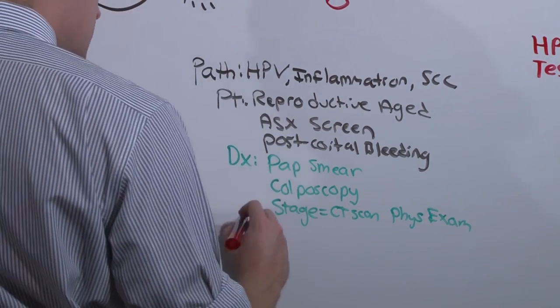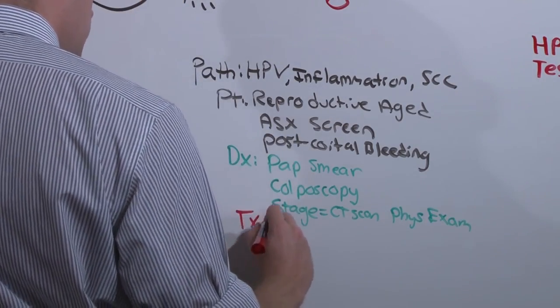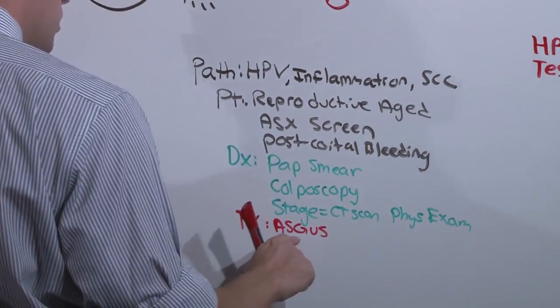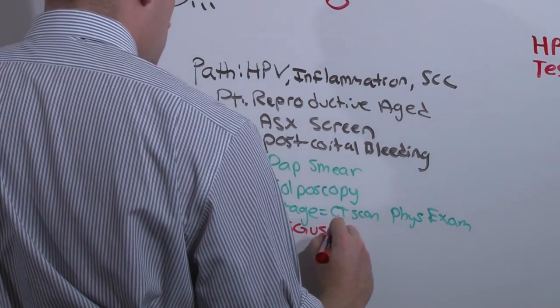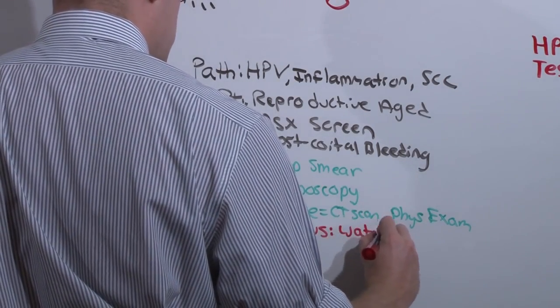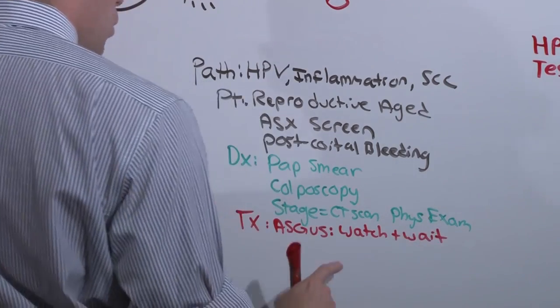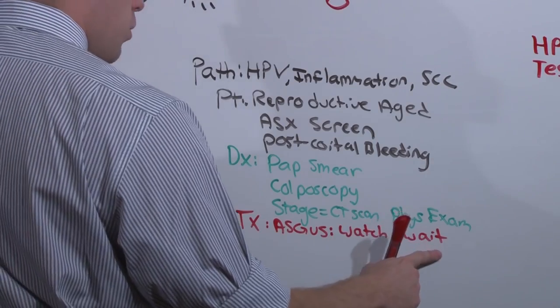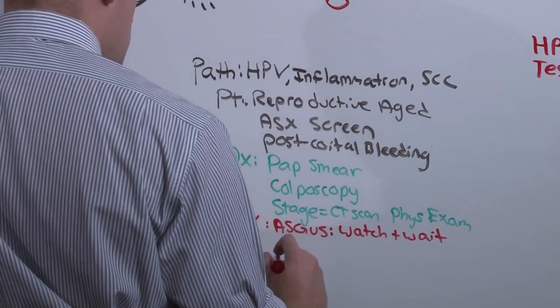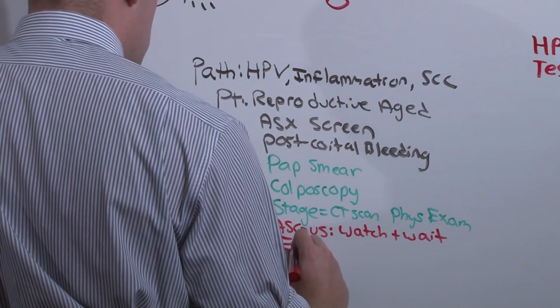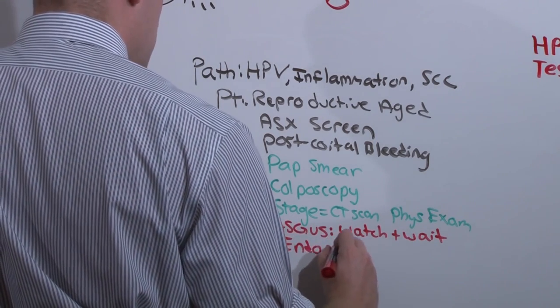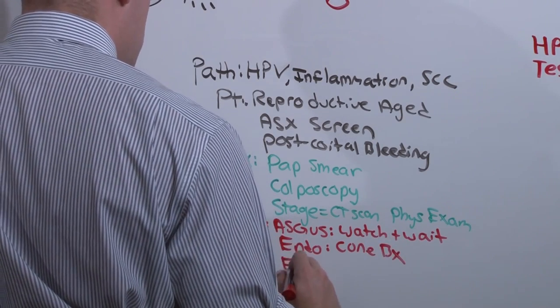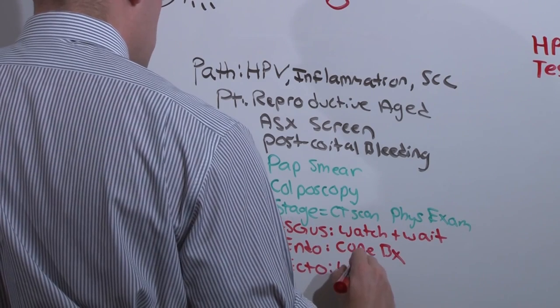The treatment is dependent on what you find. If you have ASCUS or CIN1, you do the watch and wait, meaning either HPV DNA testing or Q3 month pap smears. If you have endocervical biopsies that are positive, you do a cone biopsy. If you have an ectocervical lesion, you do local destruction.